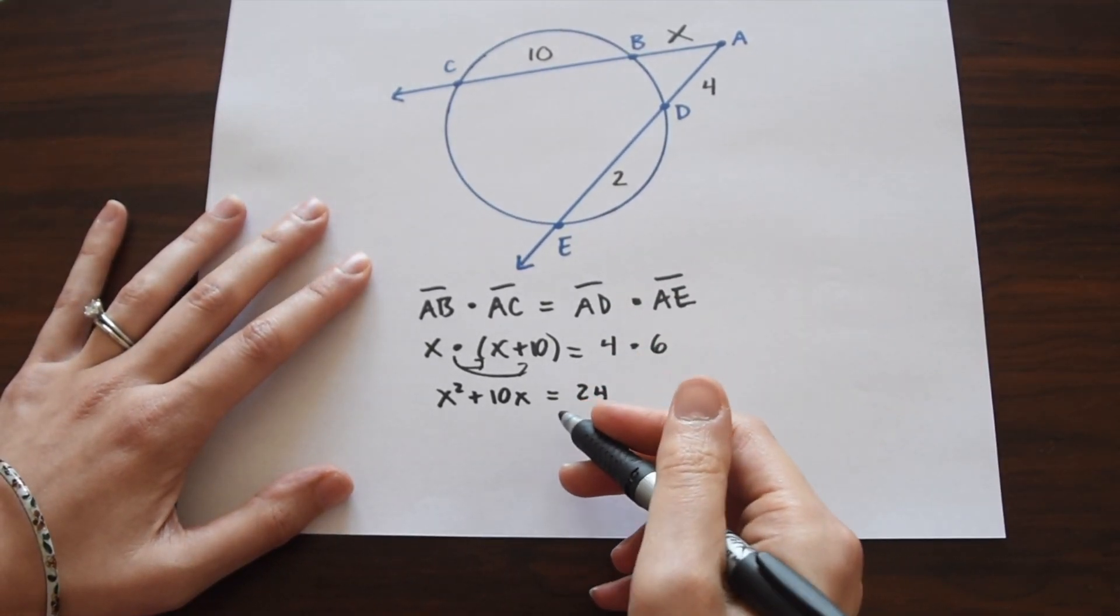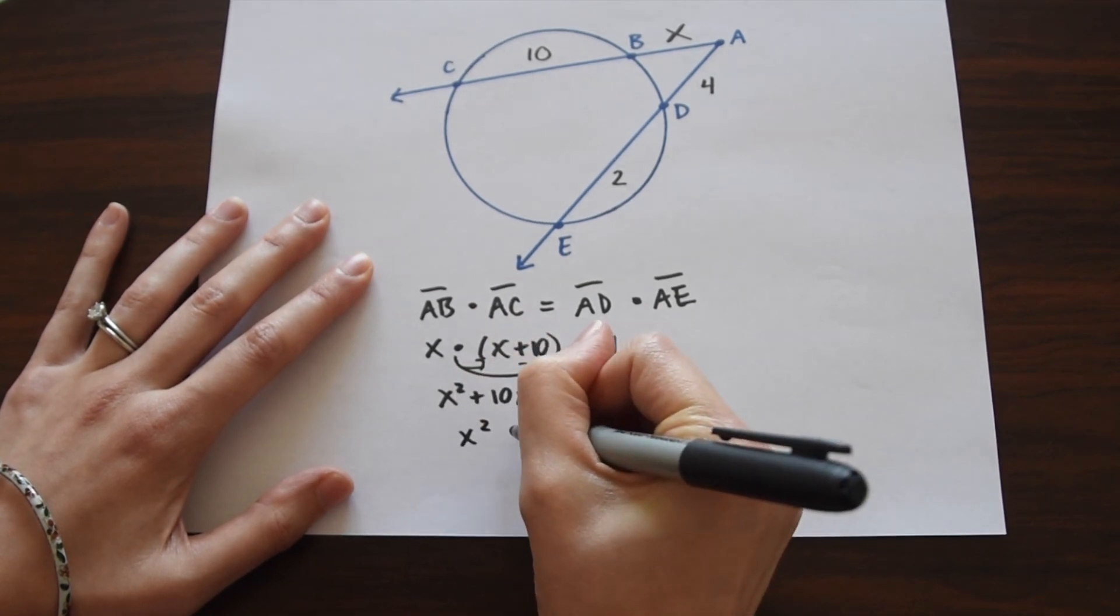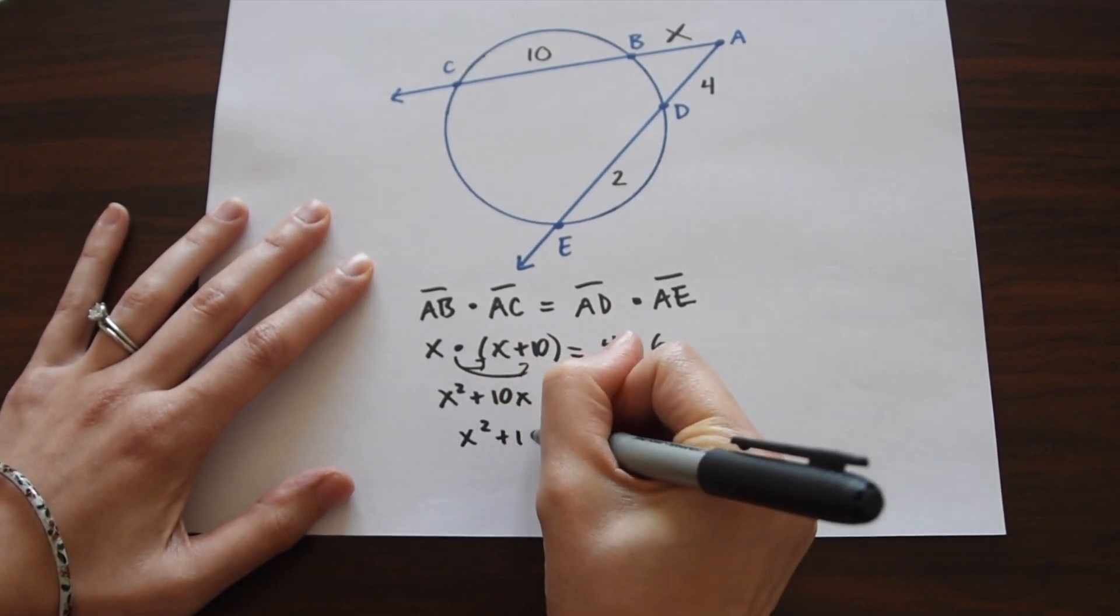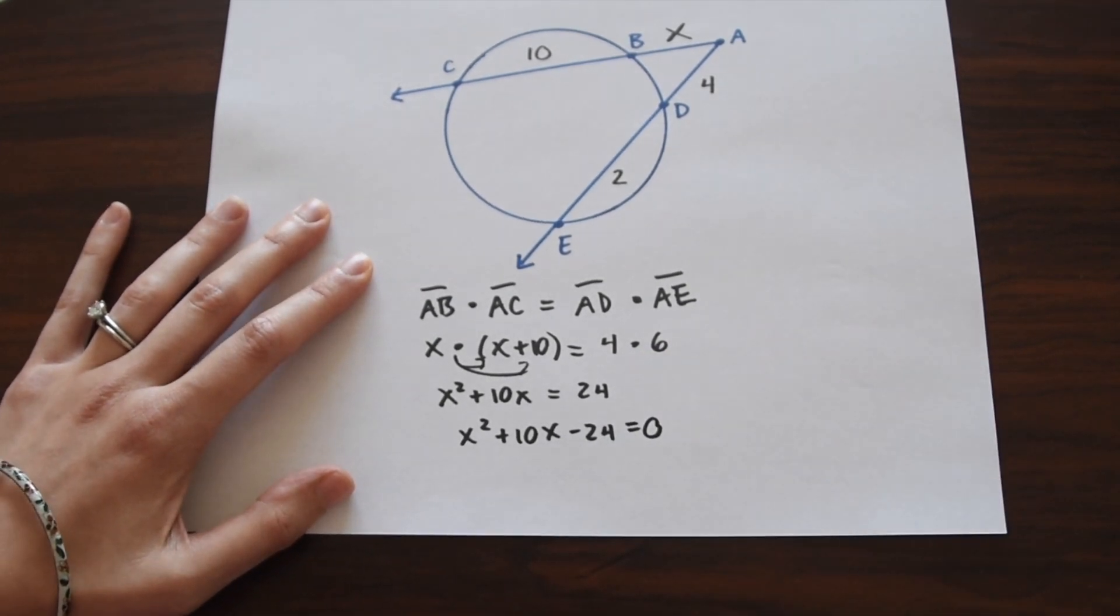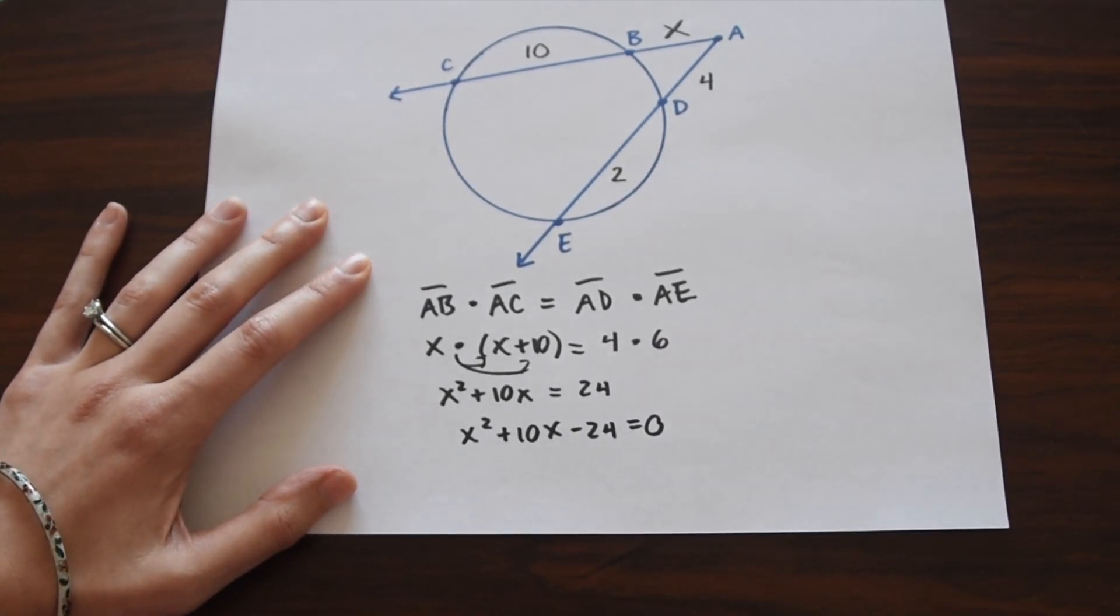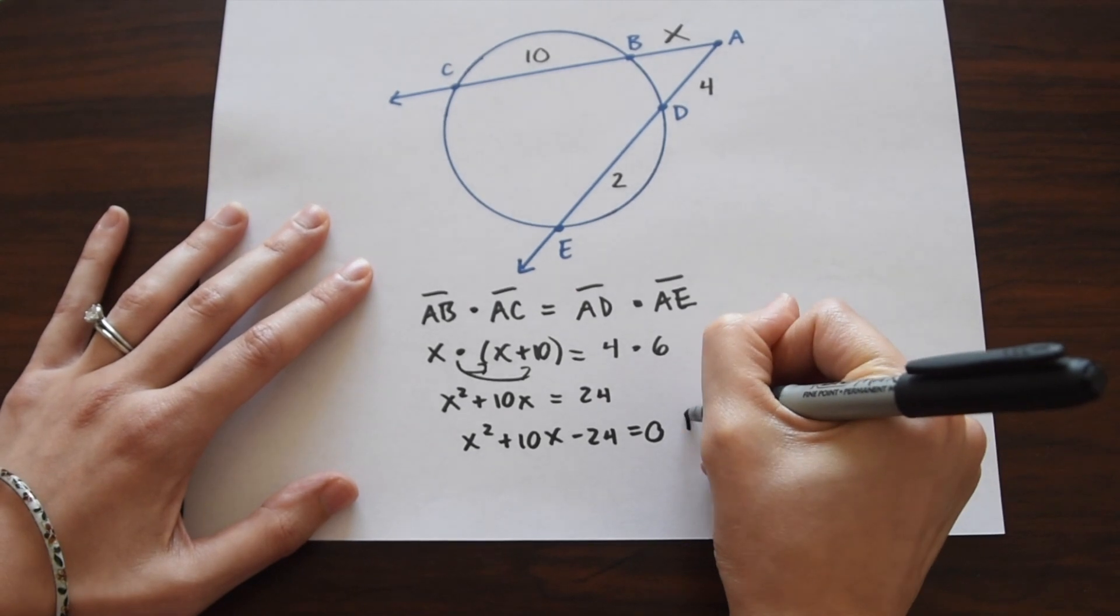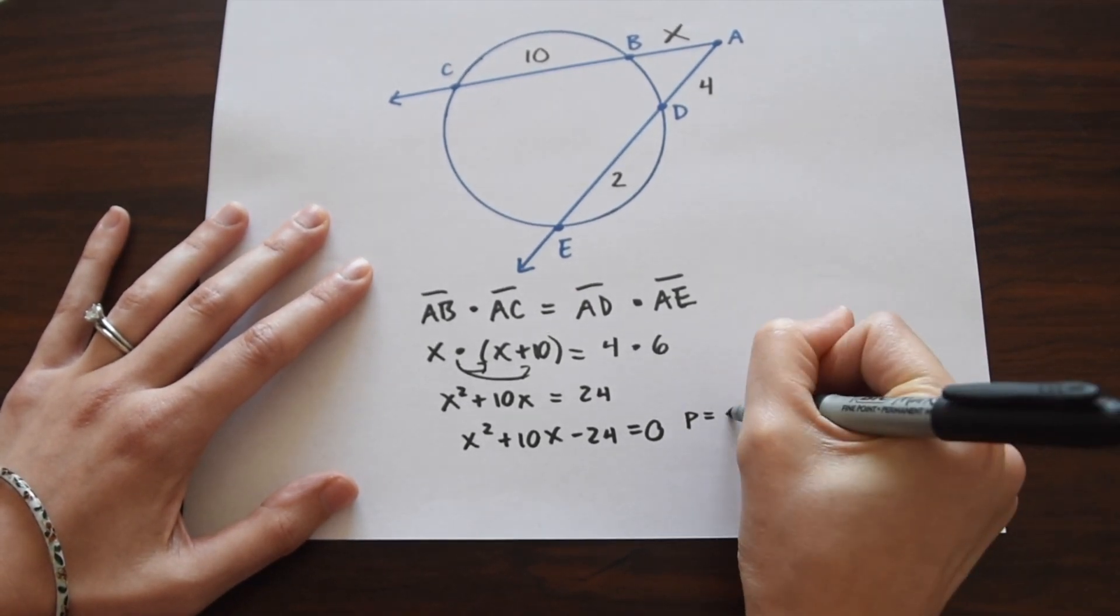And now notice we just have a quadratic equation that we need to solve. So we want to bring this 24 to the other side by subtracting. And when we do that, we get X squared plus 10X minus 24 equals 0. And then we could factor. I always like to use the product sum method.